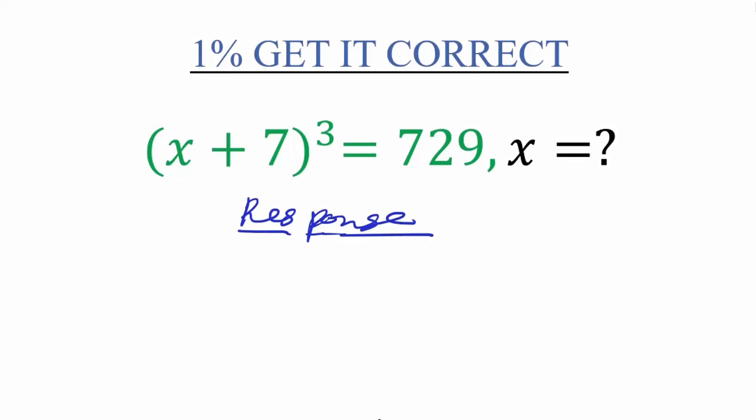So we have the (x + 7), the whole of it, power 3, equals to 729. And now we are asking ourselves, what's the value of x? From here we are going to first consider the value on the right hand side, which is the 729.